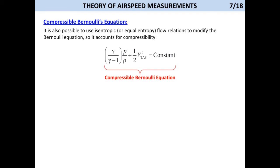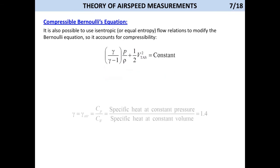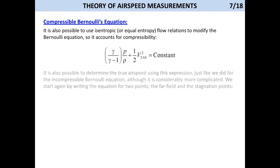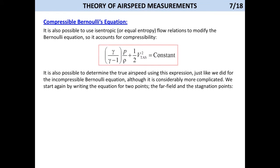The fix for the airspeed indication was permitted by the use of the so-called compressible Bernoulli equation. The derivation of this equation is presented to undergraduate students of aerospace engineering as well. Here, the constant gamma is the heat capacity ratio of specific heats, that is, the ratio of the heat capacity of air at constant pressure to the heat capacity at constant volume. It is also possible to determine the true airspeed using this expression, just like we did for the incompressible Bernoulli equation, although it is considerably more complicated.